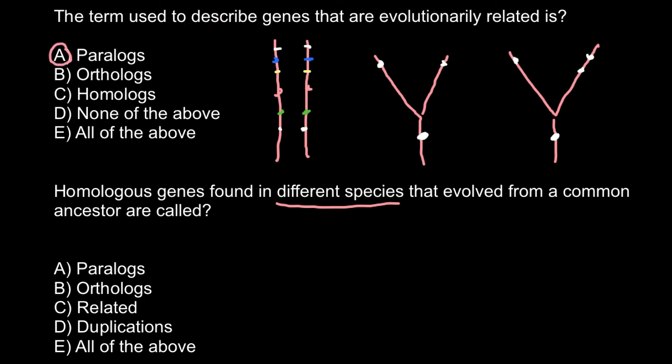This question is not well defined — it should specify 'same species' more clearly. Next question: homologous genes found in different species that evolved from a common ancestor are called — genes that evolved from the same ancestor, where two species separated but these genes perform the same functions in different species — we call those orthologs, and this is answer B.